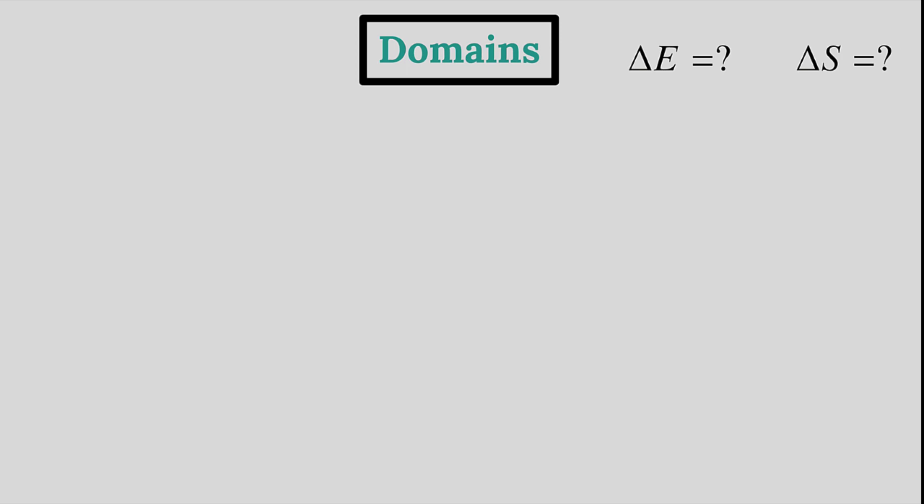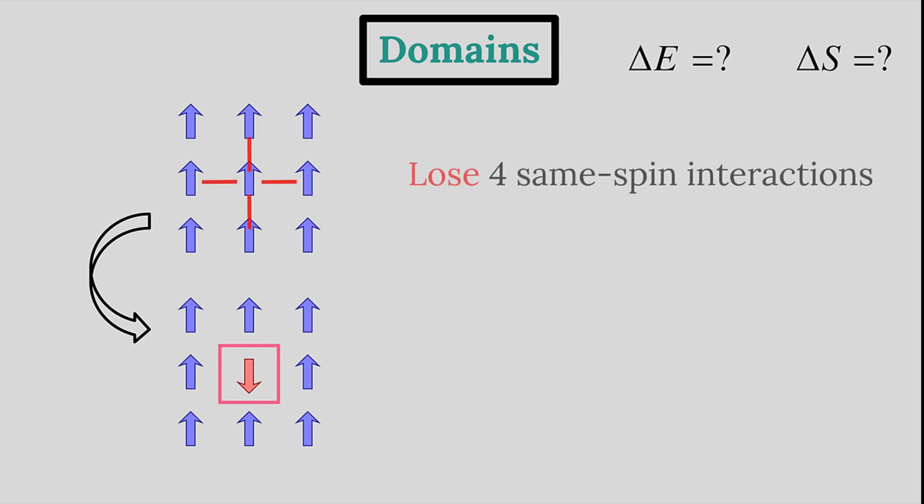Let's start off small and consider the simplest domain creation, the flipping of a single spin. In changing the spin, the up-up spin interactions all turn into up-down interactions. In other words, we lose four of the same spin interactions and gain four of the opposite spin interactions.